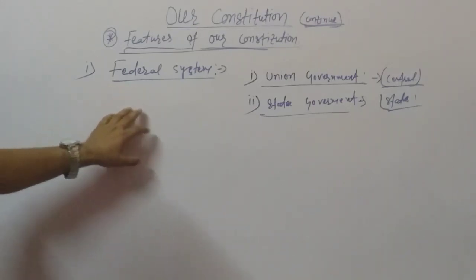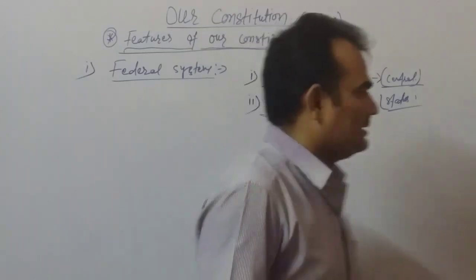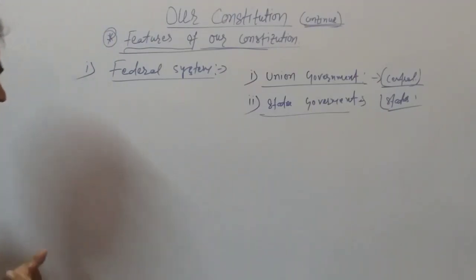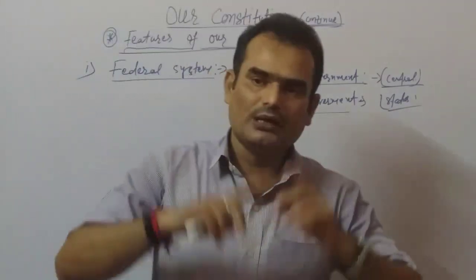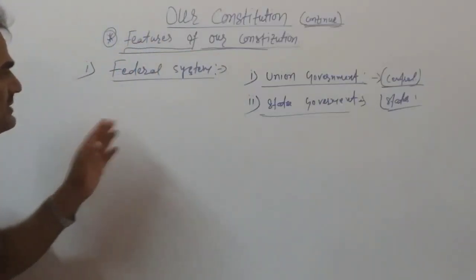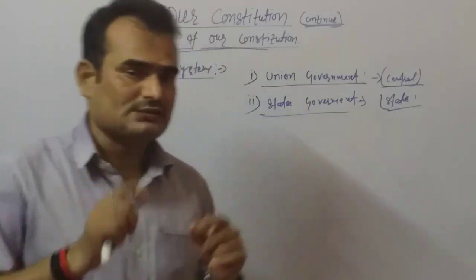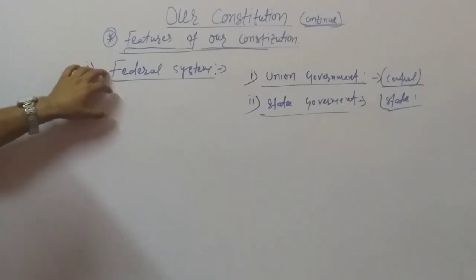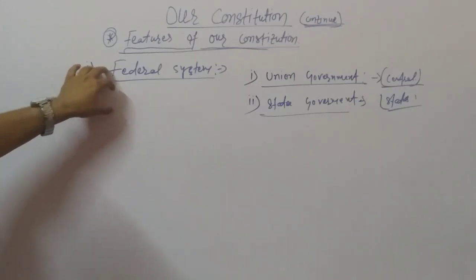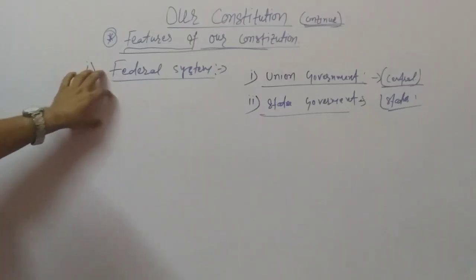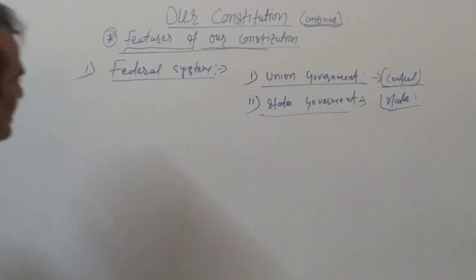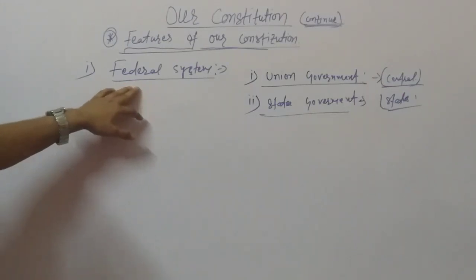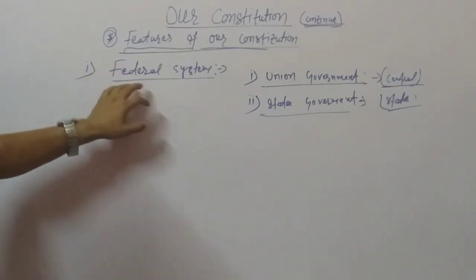The laws made by the state are applied only within that state. So the central law is made for the whole country, and the state government makes laws for their state. This is the federal system.